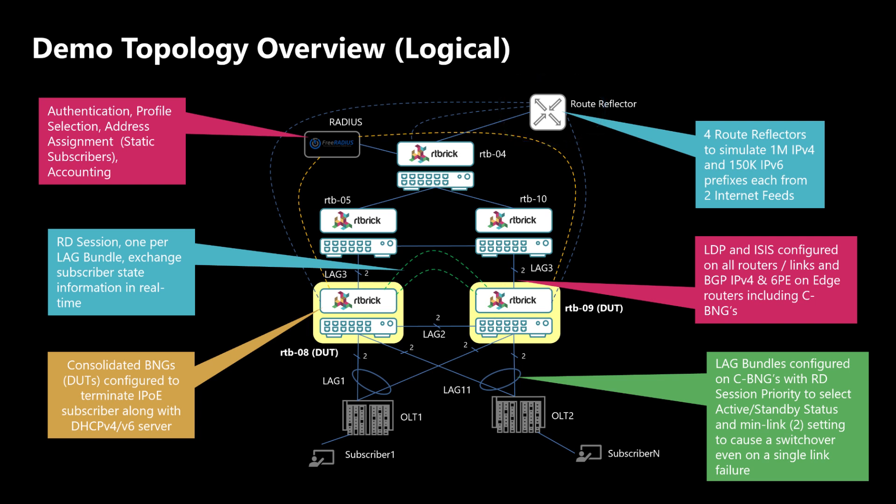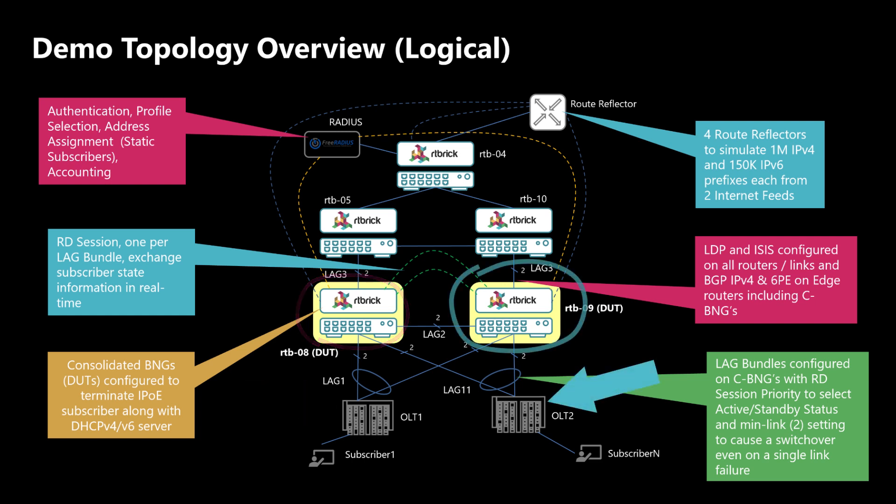The DUTs also have BGP connectivity towards the route reflector, which is advertising one million IPv4 prefixes and 120K IPv6 prefixes. Depending on the HA redundancy configuration, one DUT will act as active and one as standby. For one LAG it will be vice versa — for OLT1, RTB08 will be the active node, and for OLT2, RTB09 will be the active node.